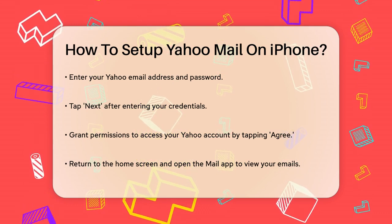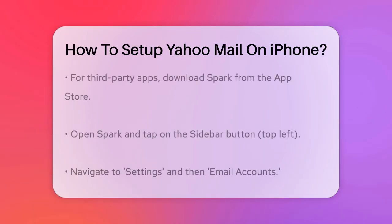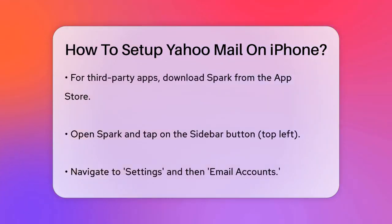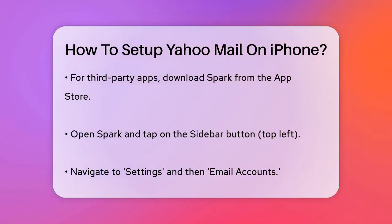Tap the Agree button to allow the iPhone to sync your Yahoo Mail. That's it — you've successfully set up your Yahoo Mail account on your iPhone. To check your emails, go back to the home screen, find the Mail app, and open it. You'll see all your emails listed there.